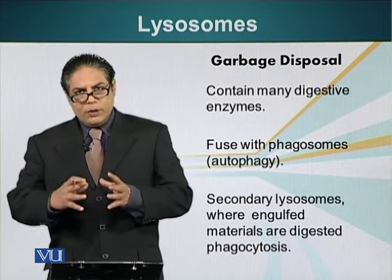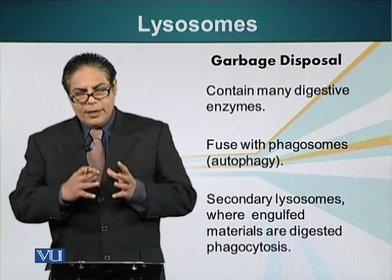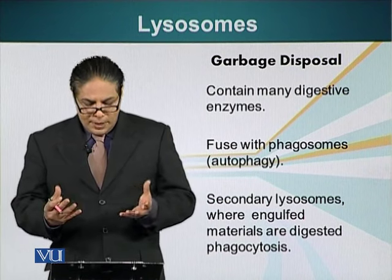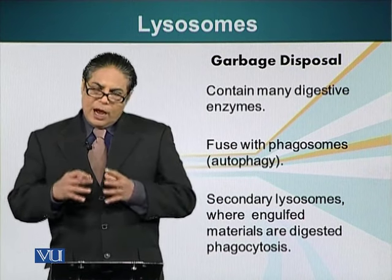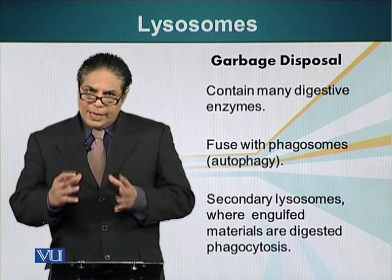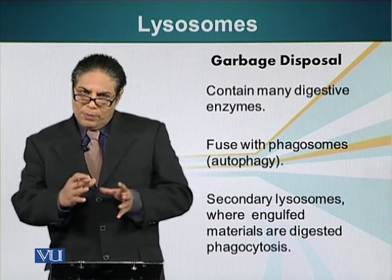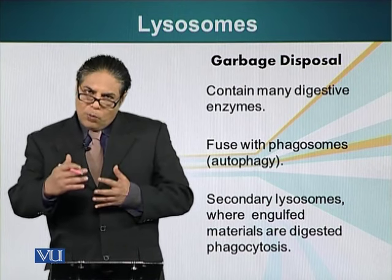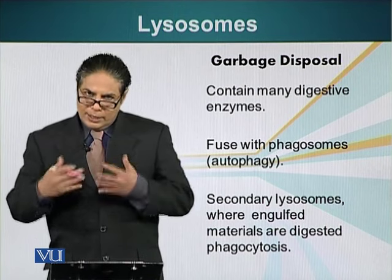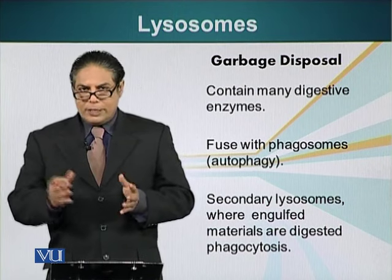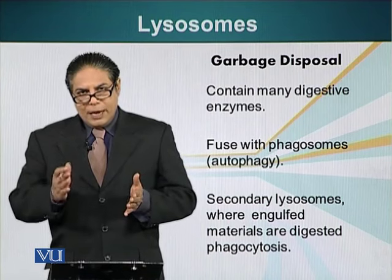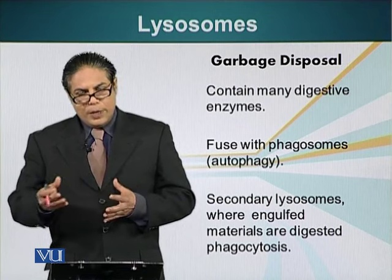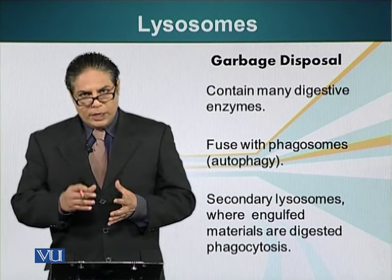Lysosomes are basically the organelles that get rid of the garbage of the cell. Lysosomes contain hydrolytic enzymes — enzymes that can break polymers down into monomers. These monomers can then be recycled in the cell. For example, if it is a protein, it can be cut into smaller amino acids that can be used to build other proteins.